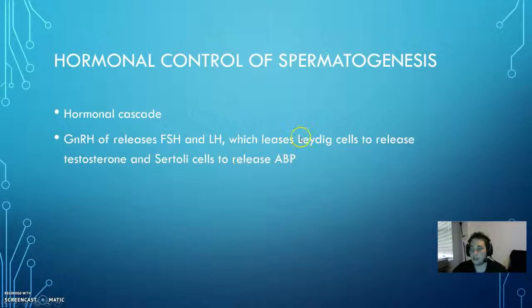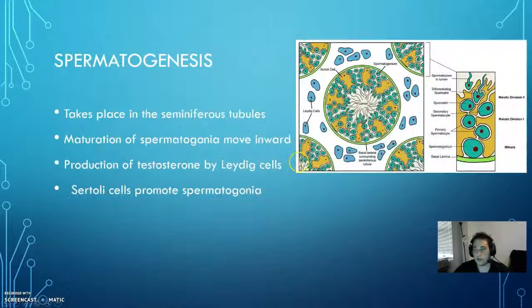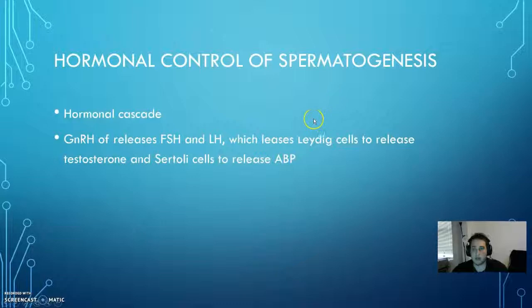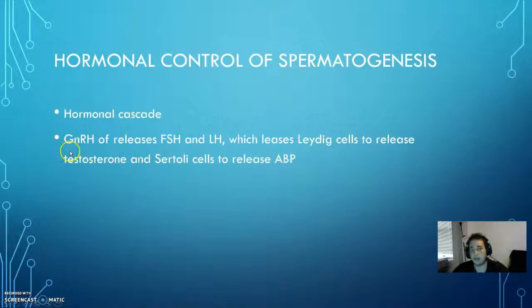FSH and LH tell the Leydig and Sertoli cells to release their respective testosterone and ABP proteins. Once enough ABP and testosterone is produced, it's also going to inhibit FSH and LH, which in turn inhibits GnRH — so there's a negative feedback loop. If there's too much testosterone, you're going to decrease GnRH, which decreases FSH and LH.